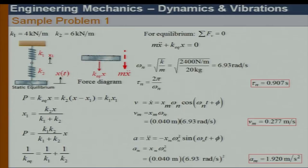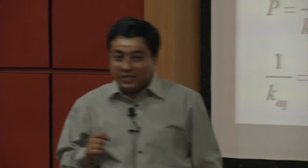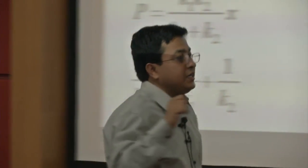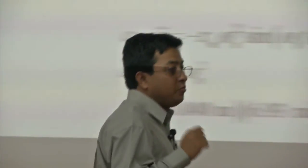For the series spring system: first understand whether it is a 2-degree or 1-degree of freedom system. It is only 1-degree of freedom because there is no mass attached at the intermediate point.